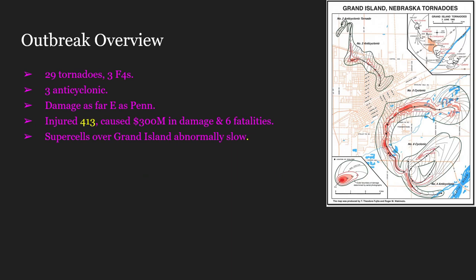Starting with our outbreak overview, as you can see we have our Grand Island Nebraska tornadoes here. A grand total of seven affected the area, so as you can probably guess there will be seven notables describing each one of them. But there are 29 tornadoes from this event, three of them being F4s — a relatively large amount of intense violent tornadoes, even though the tornado count is low compared to other outbreaks.